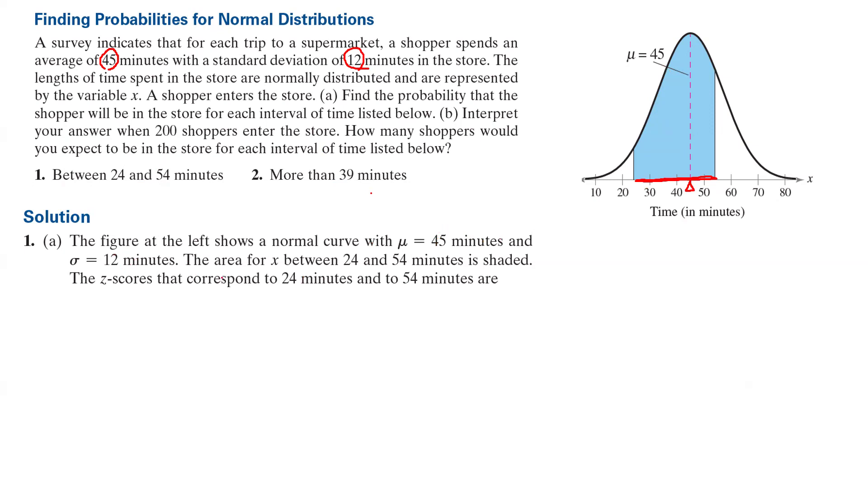You can either use your calculator to find a probability for x, or you can use your z-score. The z-score for the first x value is 24 minus the mean divided by standard deviation, which is negative 1.75. And z2 is x, which is 54 minus the mean divided by sigma, which is 0.75.